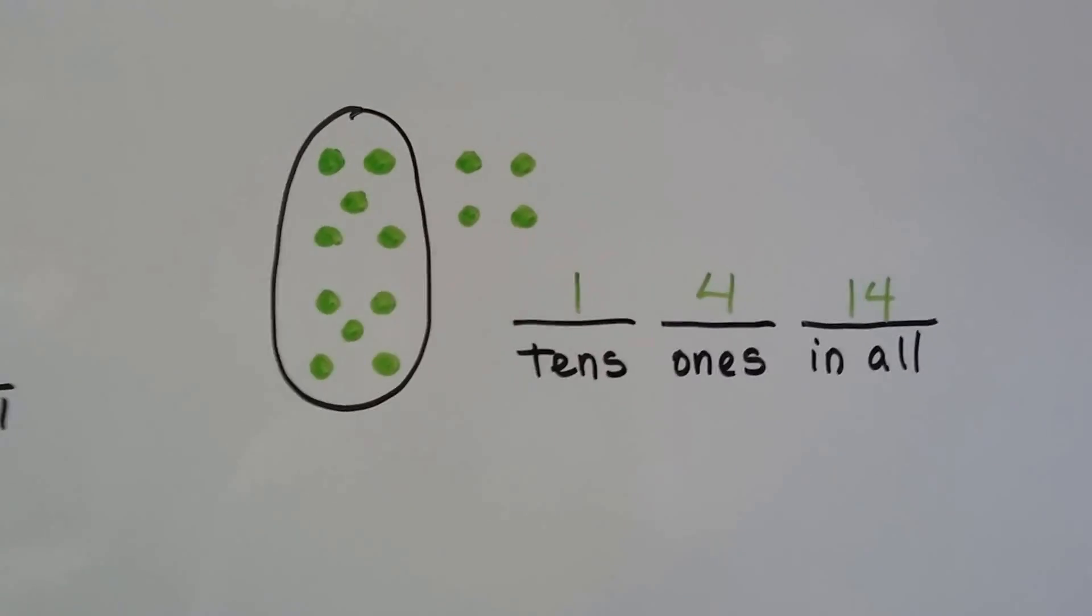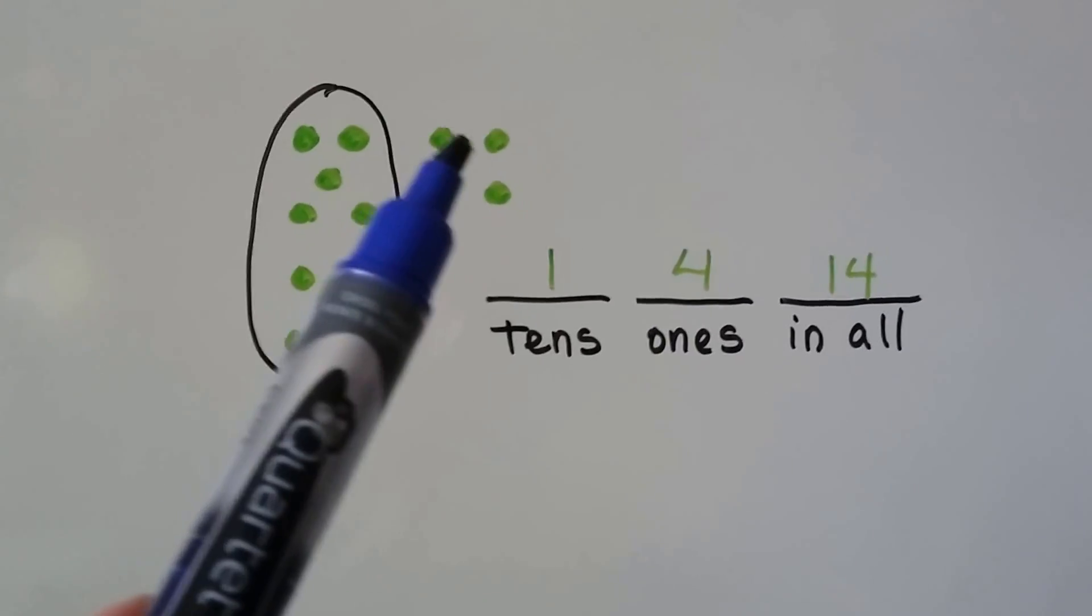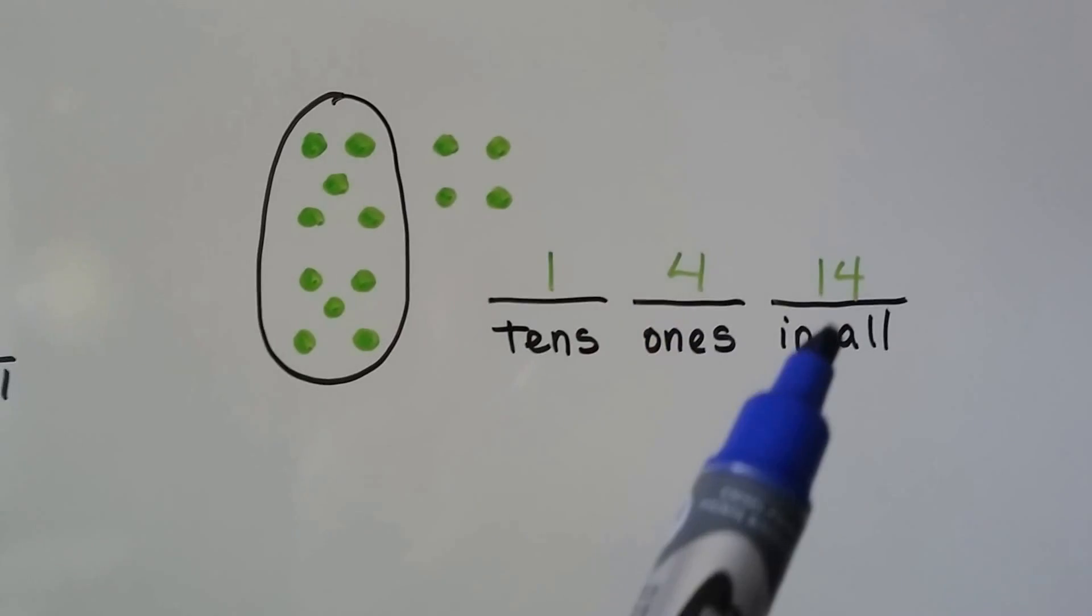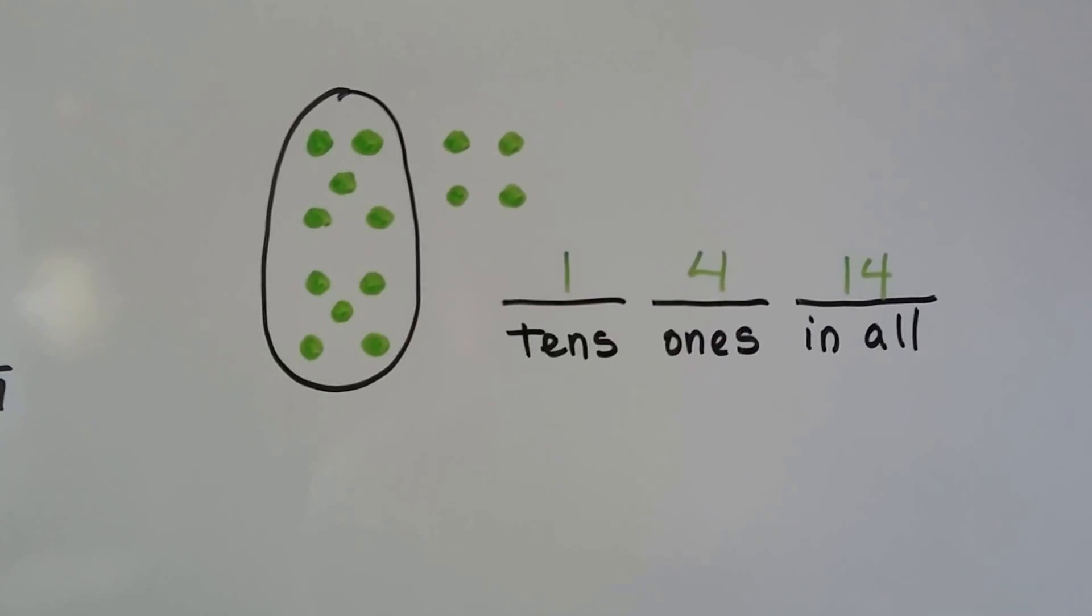Here we circled only one group of ten. And there's one, two, three, four ones. We have one ten and four ones. We have 14 in all.